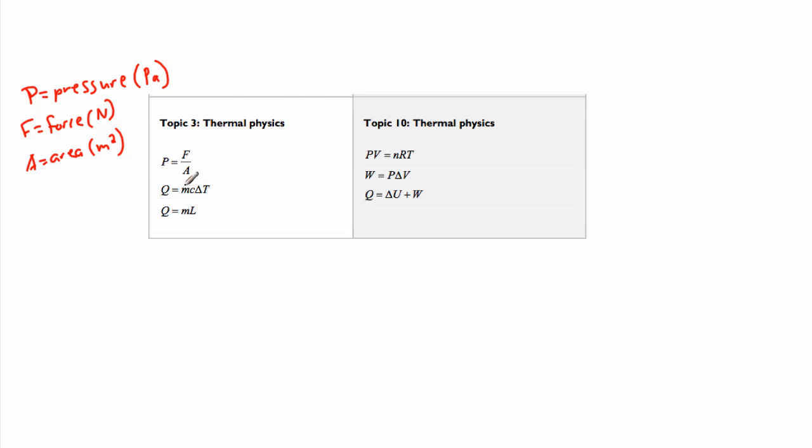Now, this one right here, Q equals MC delta T, this one is for specific heat capacity. C is the specific heat capacity. Q is the heat, in other words the energy, measured in joules. M is still the mass, usually in kilograms but sometimes in grams. And delta T is a change in temperature.